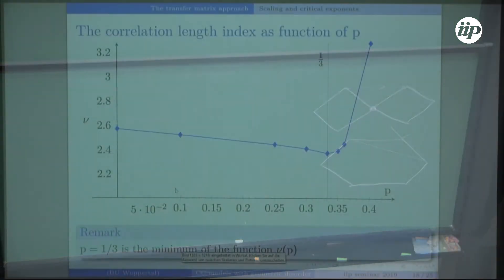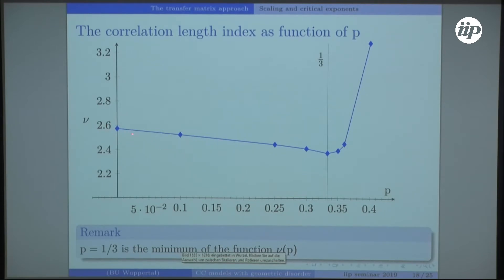Well, this is the exponent in dependence of the parameter p, and we see what makes it special is that p equals one-third is the minimum of this curve.